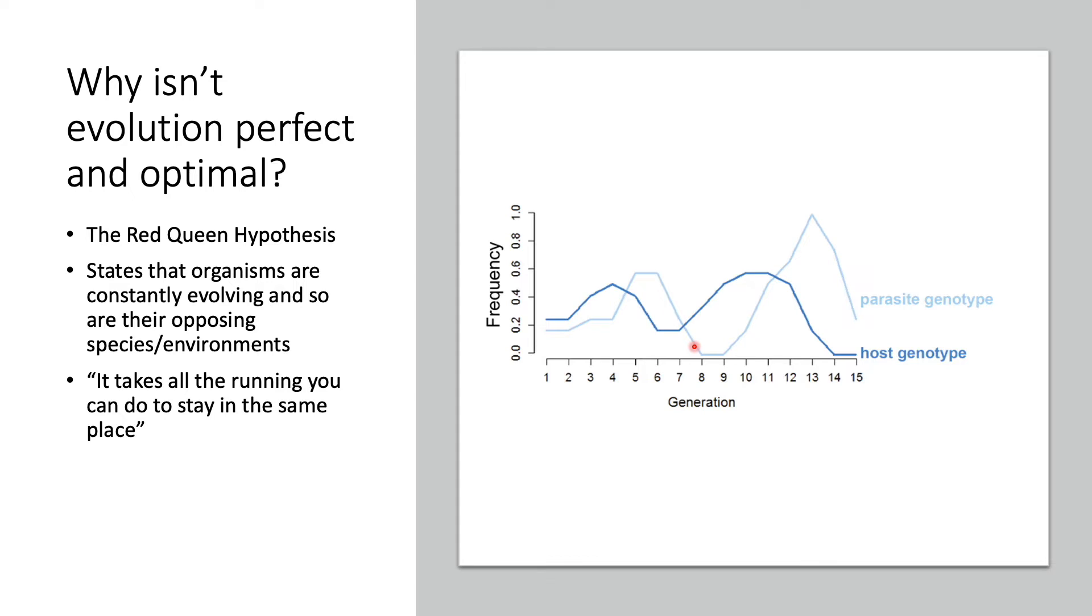When the host dips down too far, the parasite frequency also begins to dip because there's not enough host to work with. The parasite goes down and the host can now catch up, so its frequency increases, and then so does the parasite. It's just a back and forth because they're constantly evolving trying to keep up with each other.